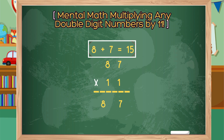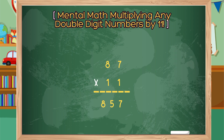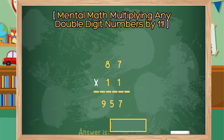Step 3: Insert the 5 into the sum between the 8 and the 7 in the product, and then carry the 1 to the 8 in the product. Add 1 plus 8, which equals 9. Your answer is 957.